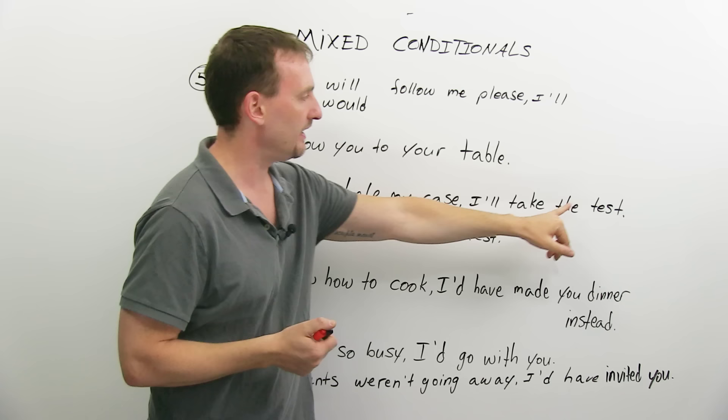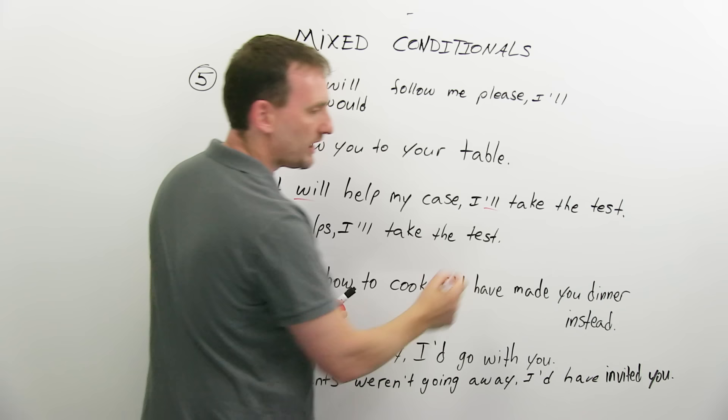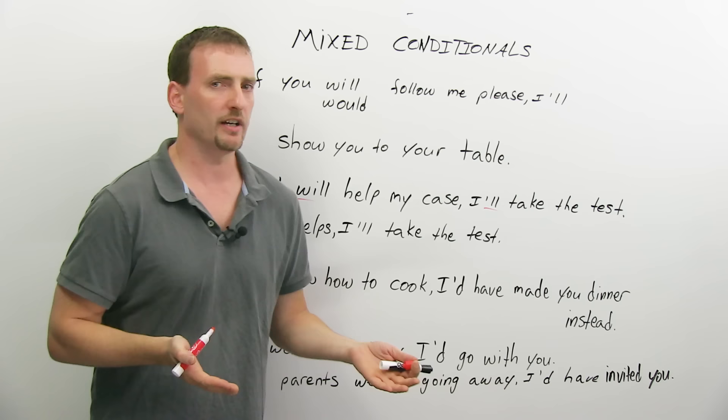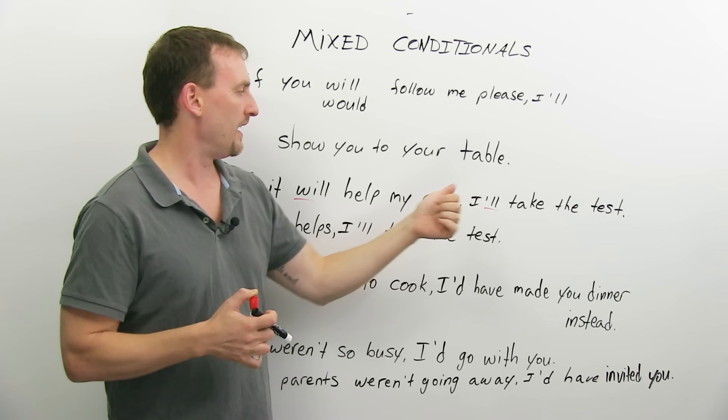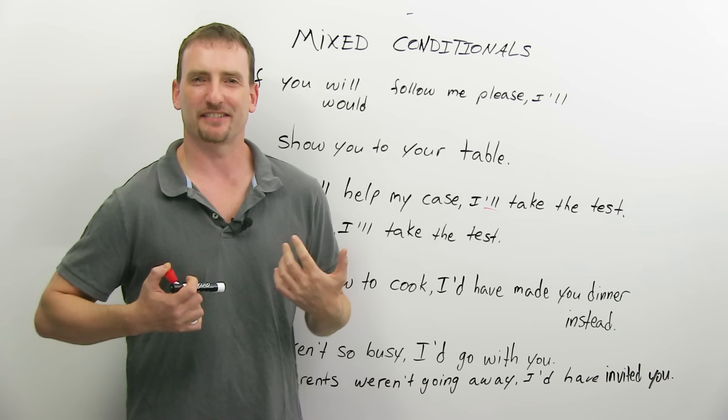If it will help my case, I'll take the test. Now, here I have if and will, and then will again. Now, you've always been told, no, don't do that, right? Don't put will with the if clause. But, again, this is not a conditional. This is the result. This is what I will do to get this result. This does not depend on this. For example, the police arrested me, and they said, we think you killed Mr. X and Mr. Y.